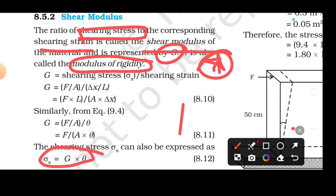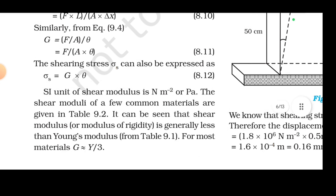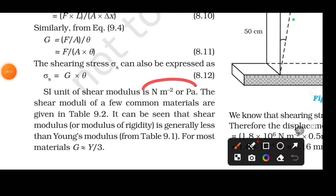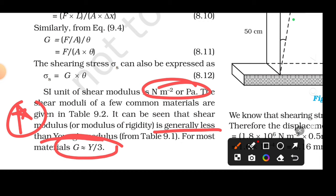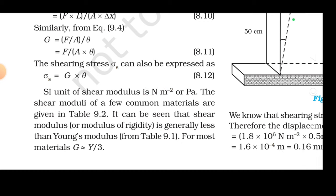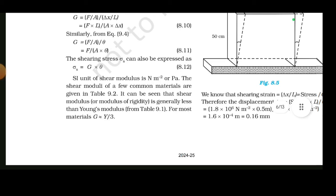The SI unit of shear modulus is Newton per metre squared, same as the unit of pressure. It can also be seen that shear modulus is generally less than Young's modulus for most materials. In fact, shear modulus is one third of Young's modulus.